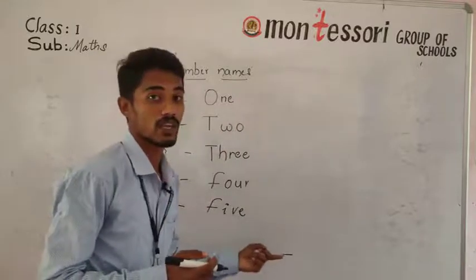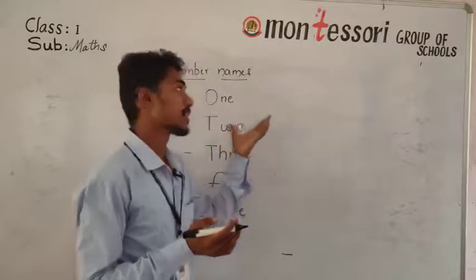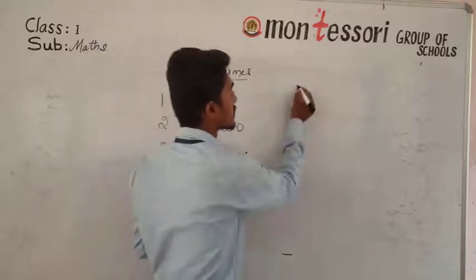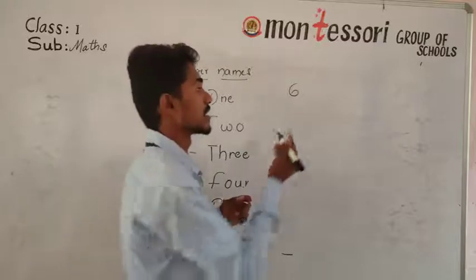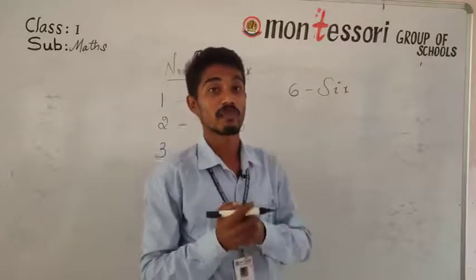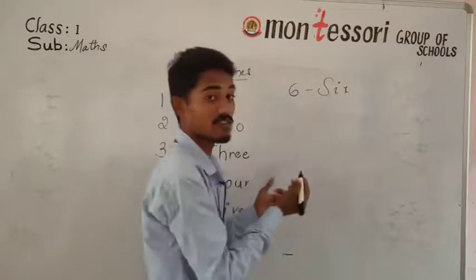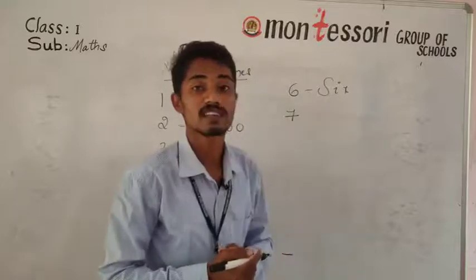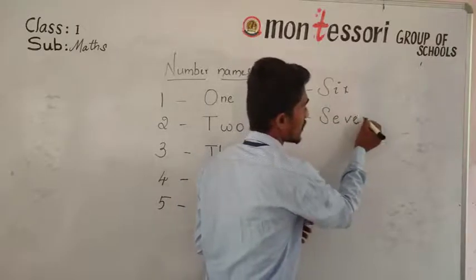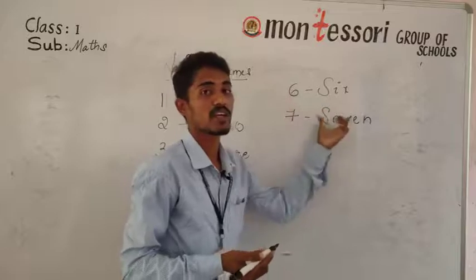In the exam the teacher will ask: tell me the number name of two — you say T-W-O. If they ask five, say F-I-V-E. After five comes six. The spelling of six is S-I-X. While playing cricket you shout six! The spelling is S-I-X. After six comes seven. The spelling of seven is S-E-V-E-N. Number name of seven is S-E-V-E-N.